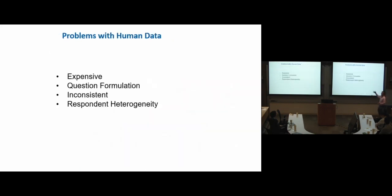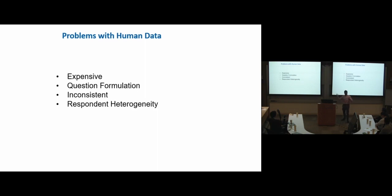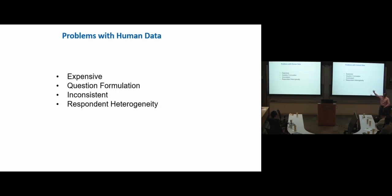There are lots of problems with human data in general and market research, but specifically in perceptual maps: it's expensive. The results can be inconsistent depending on who the respondent groups are, and they're all a little bit different. All of these issues can be to some extent addressed by AI and language models, but of course not perfectly — the prompts matter, and how you answer the question matters.